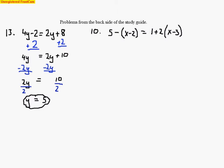What we want to do first is eliminate these parentheses by using the distributive property. A common mistake is people want to distribute the 5 over this difference — but we don't do that, it's wrong. What we want to do is distribute the number that's directly in front of the parenthesis. If we don't see a number there, we can always put a 1. We take this negative 1 and distribute it over that subtraction. Over here we want to multiply first because order of operations says to multiply before you add, so we take this positive 2 and distribute it over that subtraction.